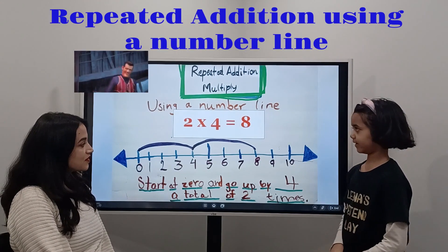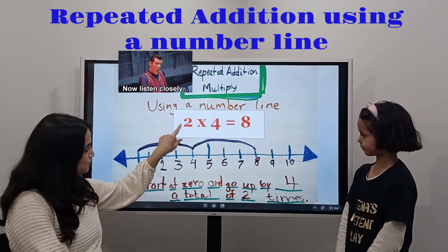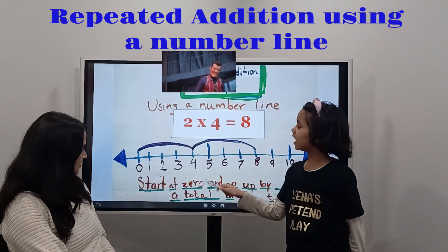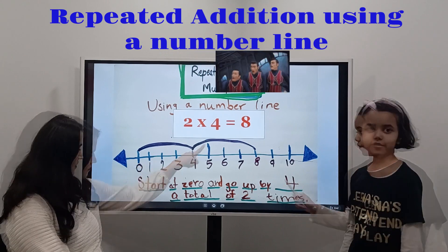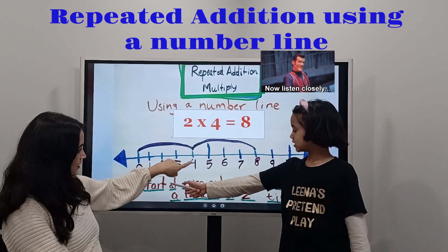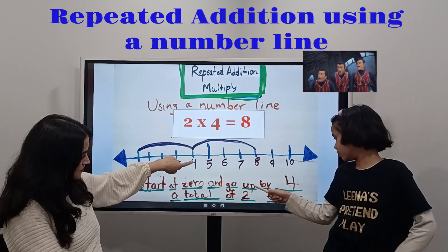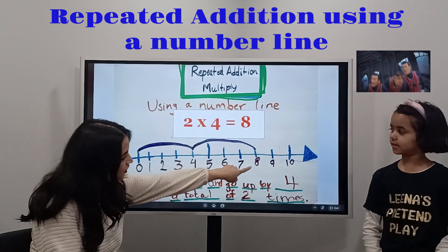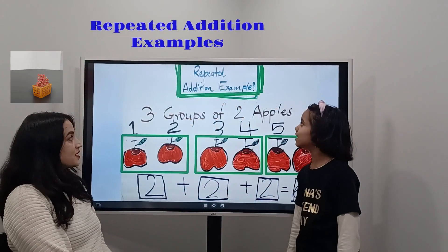Using a number line. I see a number line here, and two times four — you go up by four, a total of two jumps. So you're going to get eight. Repeat the addition.